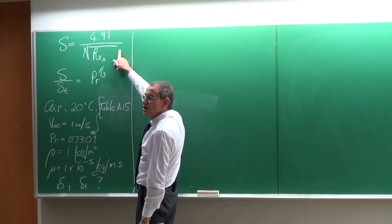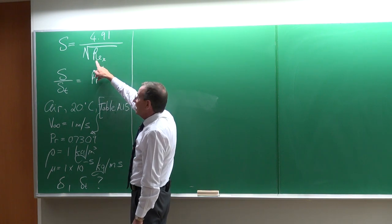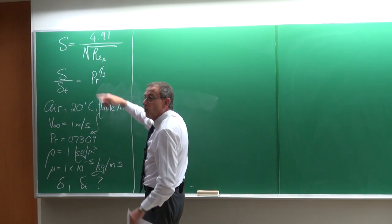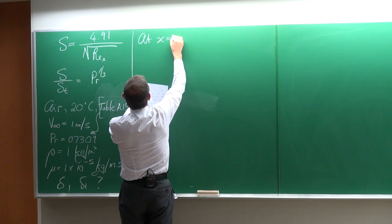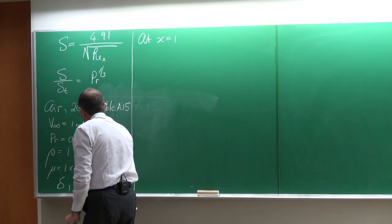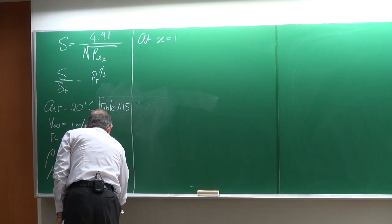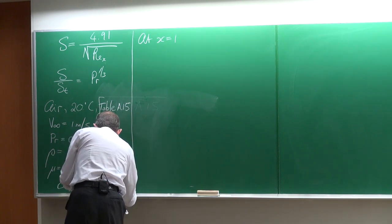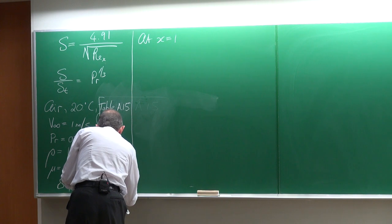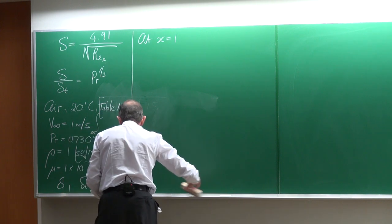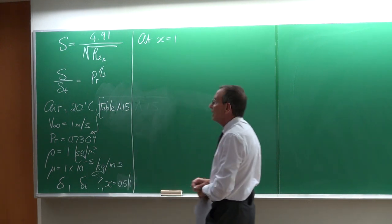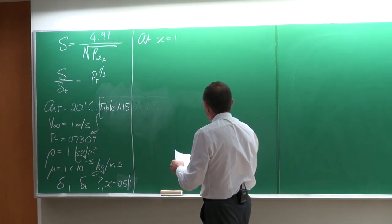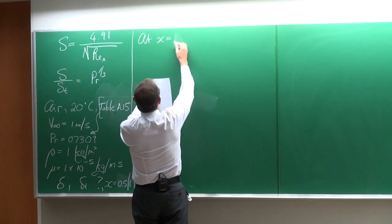Looking at this equation, we can see we need the Reynolds number — the local Reynolds number at position x. This has been asked to determine where x is equal to 0.5 meters (500 millimeters) and at 1 meter from the leading edge of the plate. Let's start with x equal to 0.5 meters.